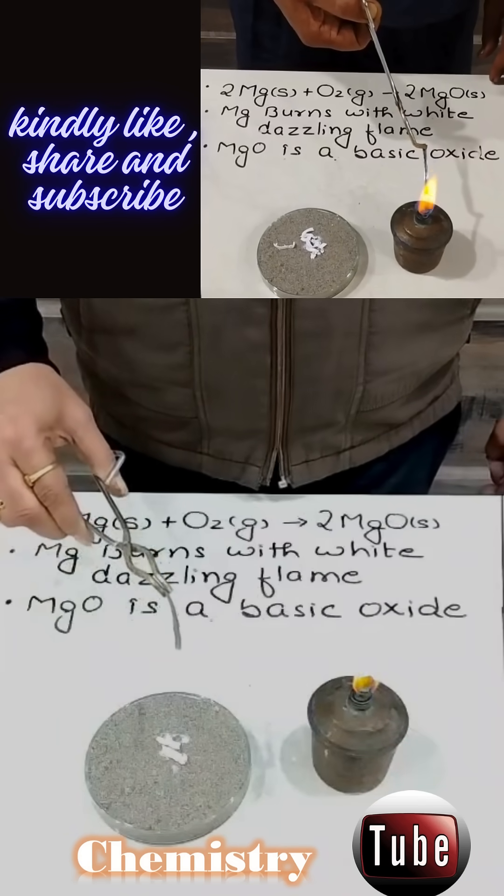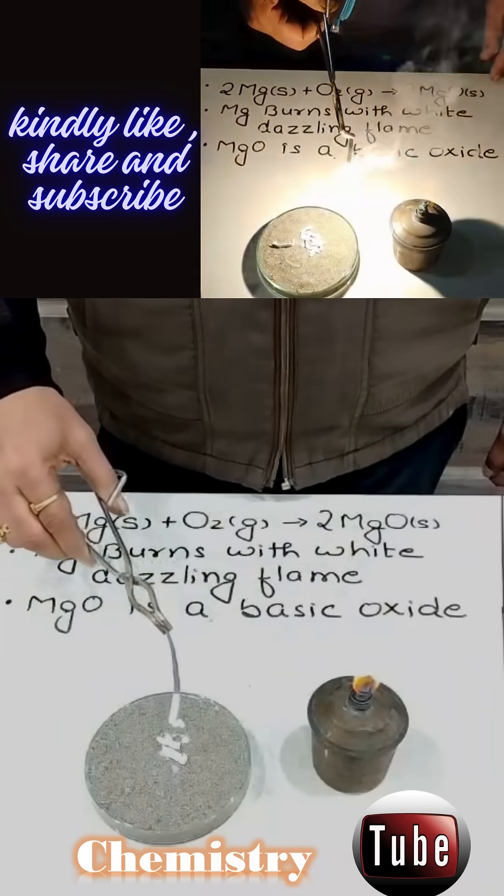Finally, it produces magnesium oxide. This is magnesium oxide which is a white colored powder.